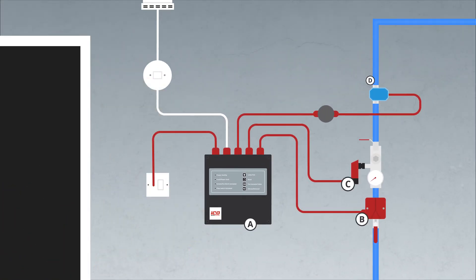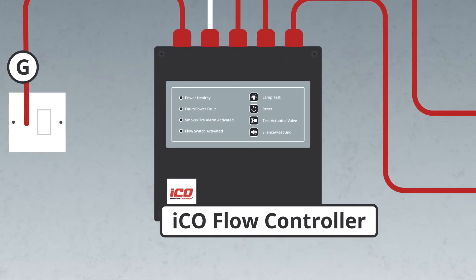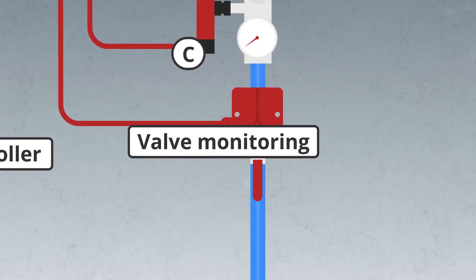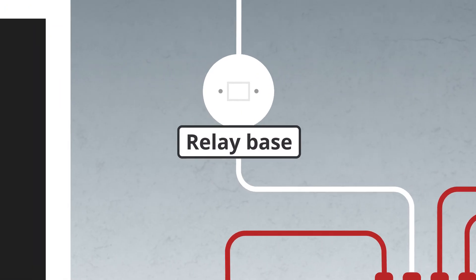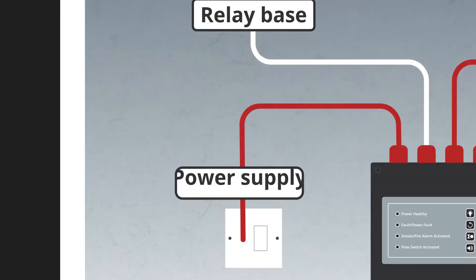The ICO OptiFlow controller is comprised of the following components: ICO OptiFlow controller, valve monitoring, flow switch, actuated ball valve, relay base, detector or fire alarm, and power supply.